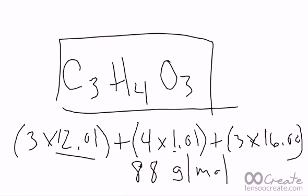Because these values, the 12.01, the 1.01, and the 16.00, those come from the periodic table. And that's in grams per mole. So we have that it's 88 grams per mole.